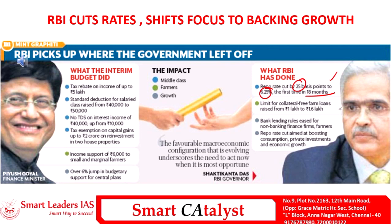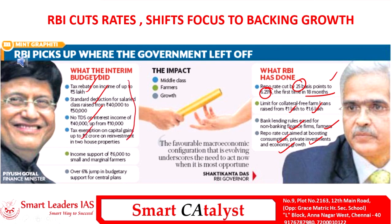The second important decision was to increase the limit of collateral-free farm loans from 1 lakh to 1.6 lakhs. Lending rules for NBFCs and farmers have also been eased. These decisions are aimed at improving consumption, private investment, and boosting economic growth. The decisions are a continuum of proposals made in the interim budget of 2019-20, which included tax rebates, standard deductions, no TDS on interest payments, and tax exemption on capital gains.